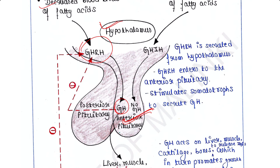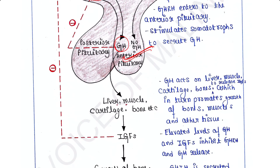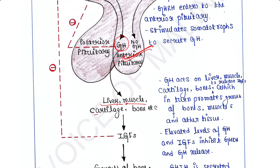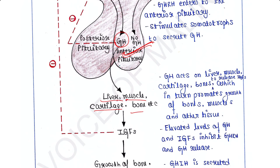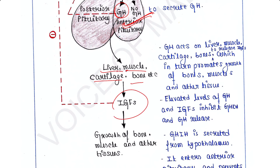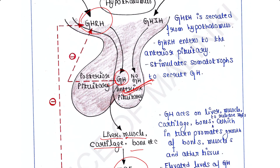GH acts directly on the liver, muscle, cartilage, bone, and other tissues to promote secretion of insulin-like growth factors, or IGFs, which in turn promote growth of bones, muscles, and other tissues. Elevated levels of IGFs or GH then inhibit the release of GHRH, which in turn inhibits the release of GH — this is negative feedback inhibition.